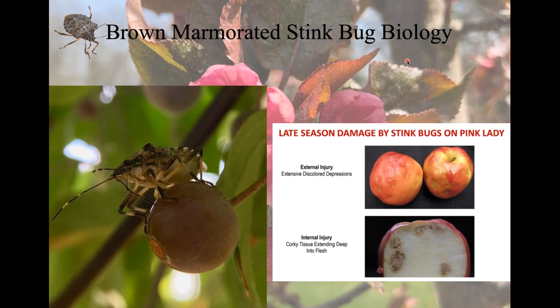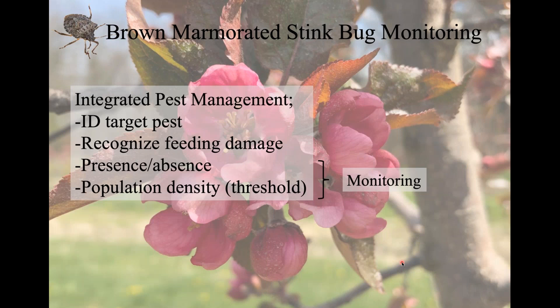With that piercing sucking mouthpart, you can see a nymph feeding on a crab apple — it has the proboscis jammed right into the fruit, sucking the juices out from underneath the skin. The tissue underneath then collapses and turns a corky brown color. Obviously with crab apples that's not much of an issue, but if you're trying to sell your fruit or vegetables, that makes your crops completely unmarketable. On the right is a Pink Lady apple covered in stink bug damage, with the subsequent corky brown damage visible inside the fruit as well.